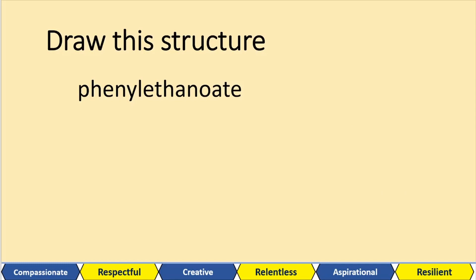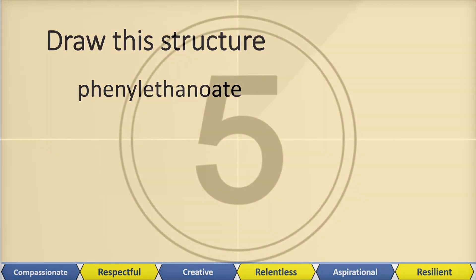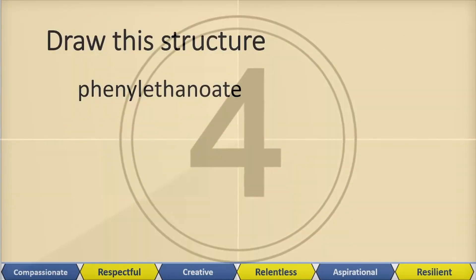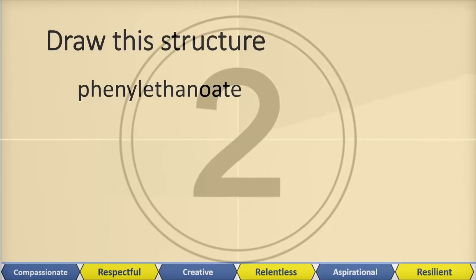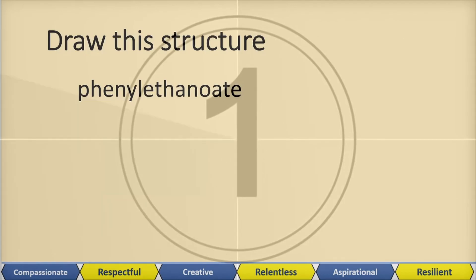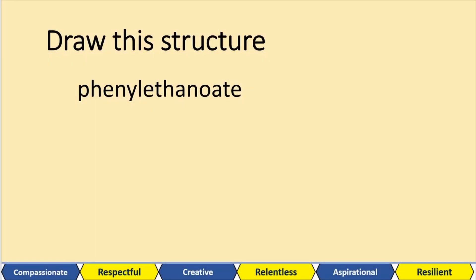What about phenyl ethanoate? That's the ester. Try and remember what that would look like as a skeletal structure. This is the ethanoate — we've got 1, 2 carbons and then the ester linkage. The carbon on the other side is going to be a carbon on the benzene ring.